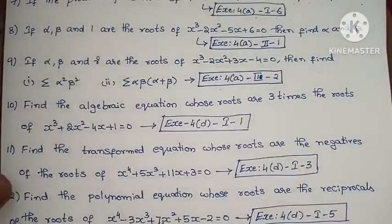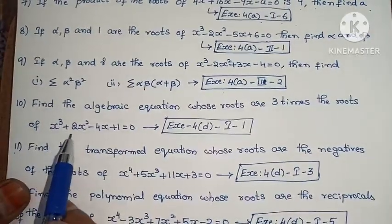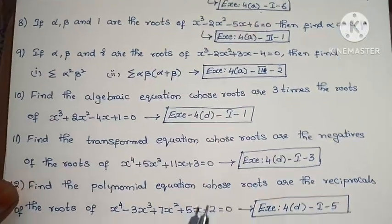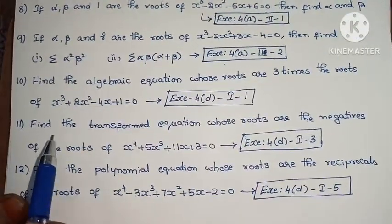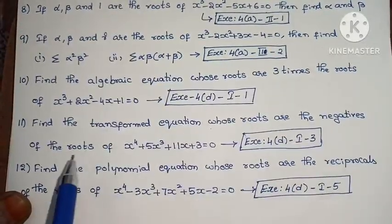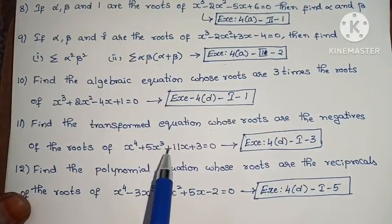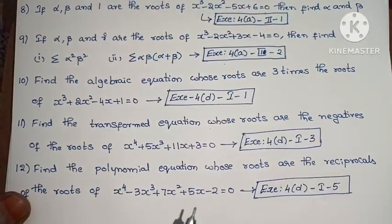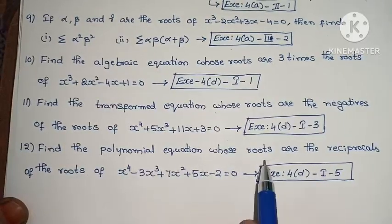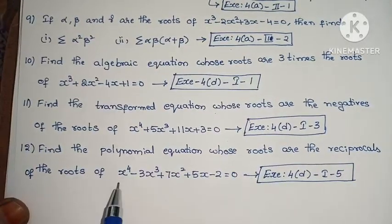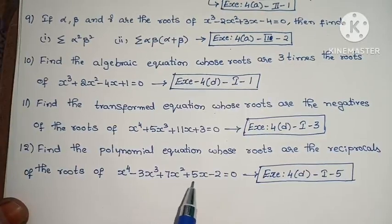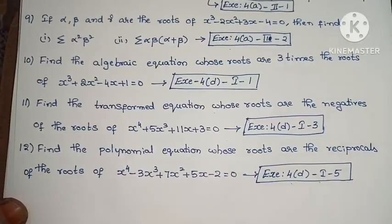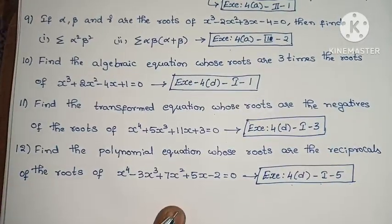Next, find the algebraic equation whose roots are 3 times the roots of x³ plus 2x² minus 4x plus 1 equals 0. Exercise 4A, first Roman numeral, first one. Next, find the transformed equation whose roots are the negatives of the roots of x⁴ plus 5x³ plus 11x plus 3 equals 0. Exercise 4A, first Roman numeral, third one. Next, find the polynomial equation whose roots are the reciprocals of the roots of x⁴ minus 3x³ plus 7x² plus 5x minus 2 equals 0. Exercise 4A, first Roman numeral, fifth one. That completes the 2-mark problems.